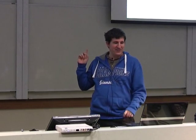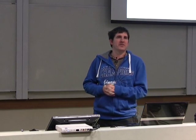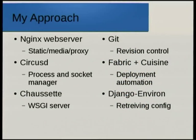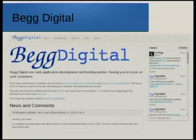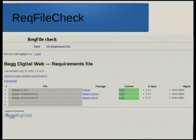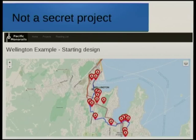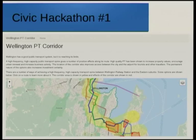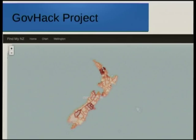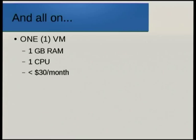My approach is to bring together a few open source pieces. I use Nginx as the front-end web server — it handles static media and then proxies on to CircusD, which provides process and socket management. Chaussette is my WSGI server. I use Git for version control, Fabric and Cuisine for deployment scripting, and Django-environ for retrieving configuration. I use it to host a variety of sites — my own, RecFileCheck, a failed startup, a civic hackathon website, and a GovHack project — all on one virtual machine with one gig of RAM and one CPU for less than $30 a month.